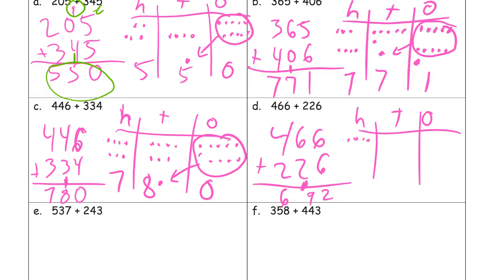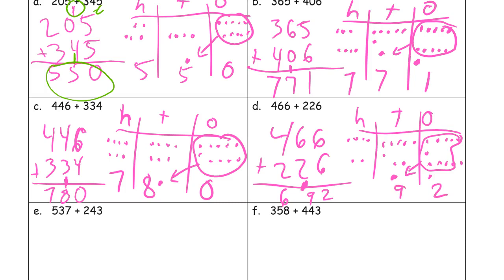Chip model: four hundreds, six tens, and six ones. And 226 is two hundreds, two tens, six ones. I can see this six and four more — that gets me another ten with two ones left over. Count all my tens — nine tens. And six hundred ninety-two.